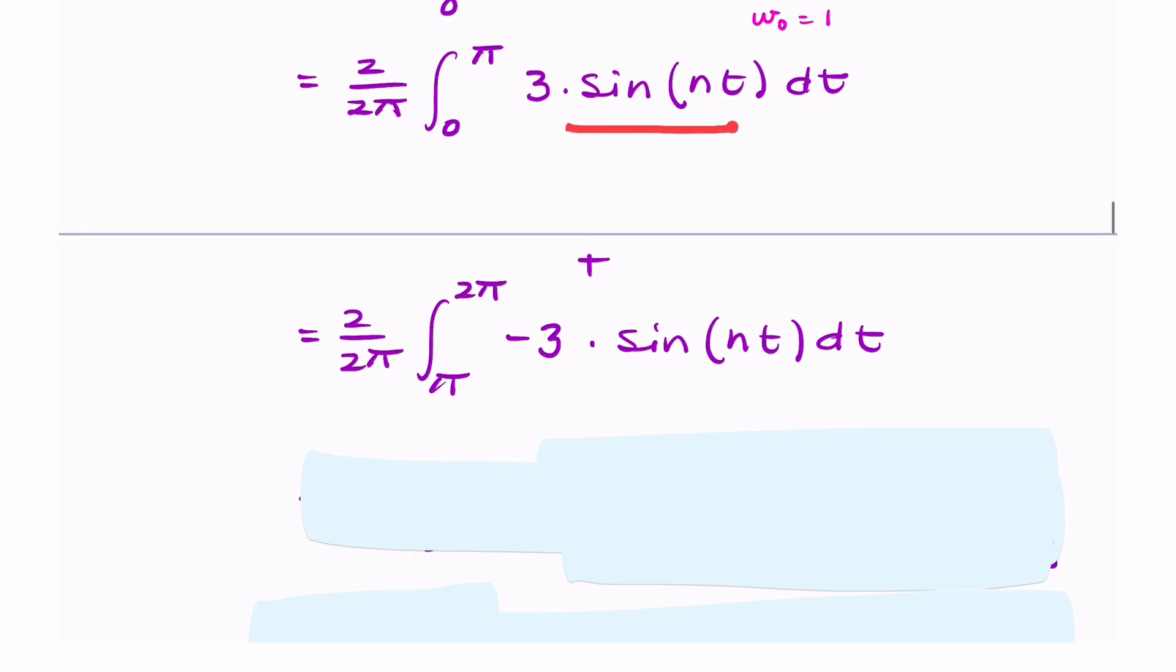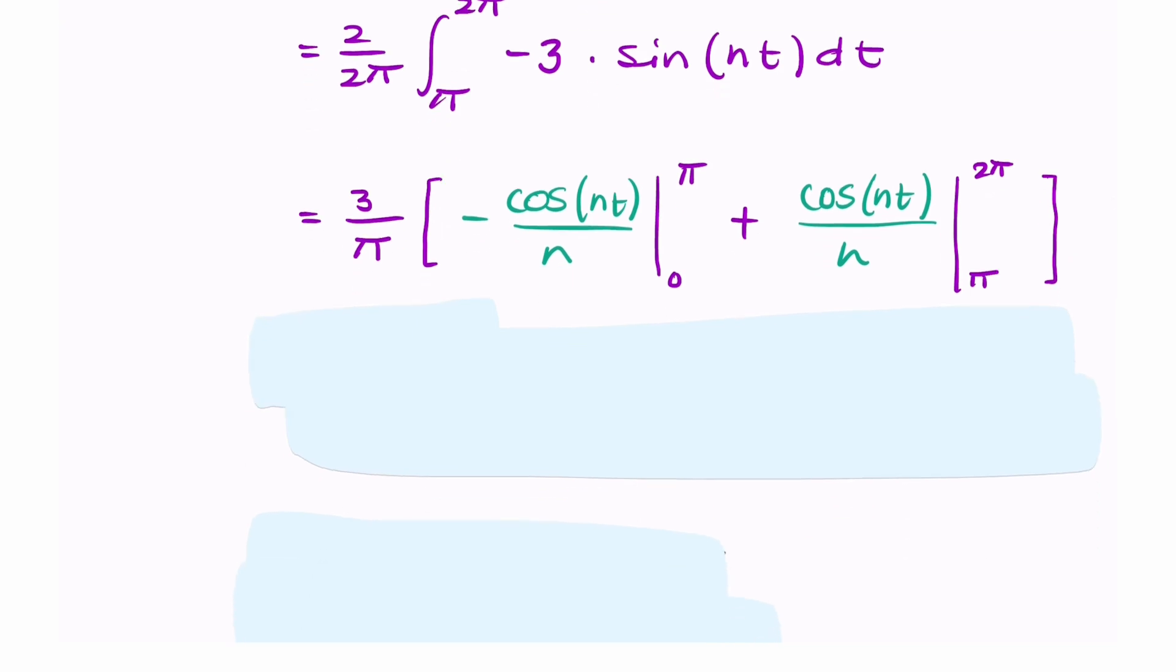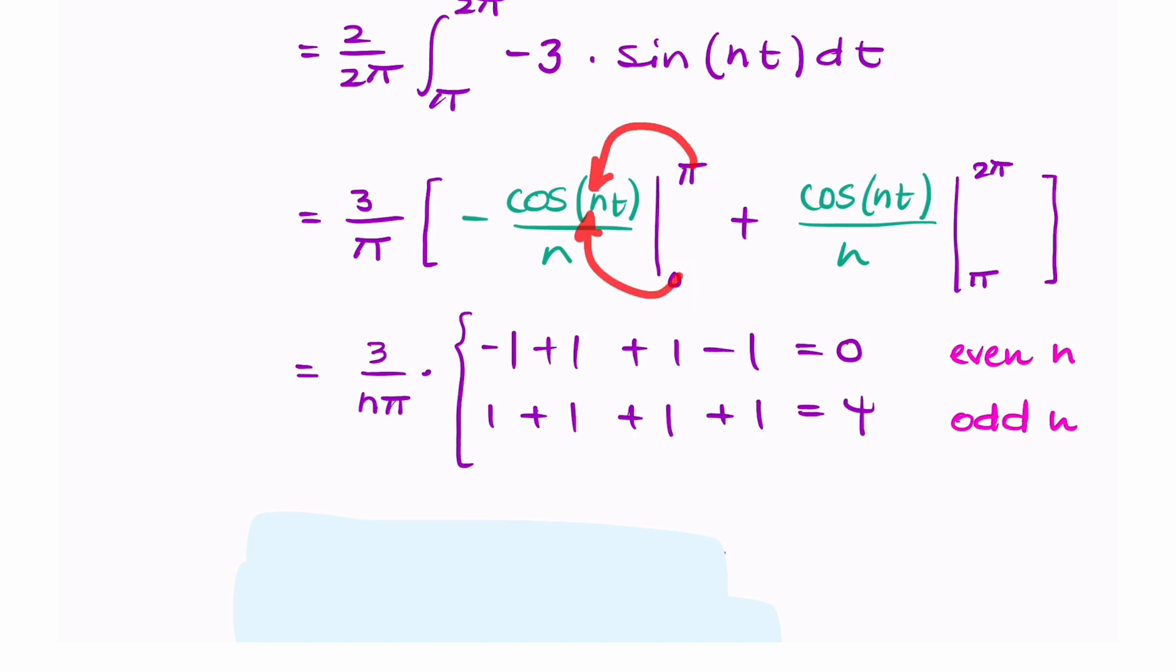So we integrate from 0 to π of 3, then add negative 3 times sine(nt) from π to 2π. The reason it's nt is because ω₀ is equal to 1. That's a straightforward integration. The integration of sine is negative cosine, and then we divide by n. If you put in your limits of 0 and π, and 2π and π, depending on whether n is even or odd, you get a different answer. If n is even, you get zero.